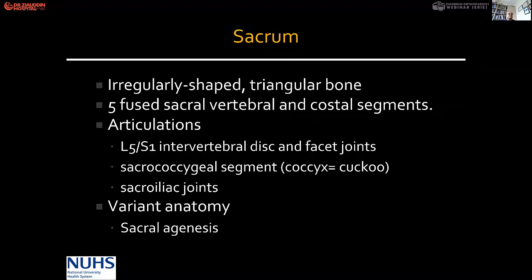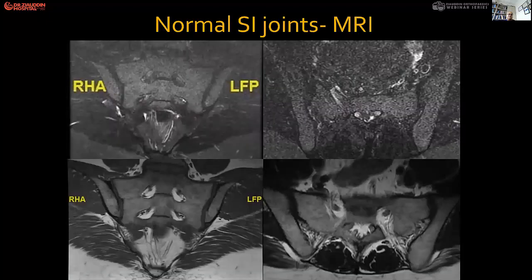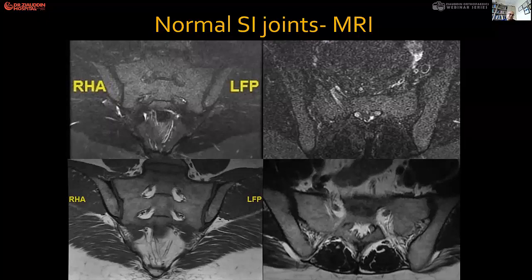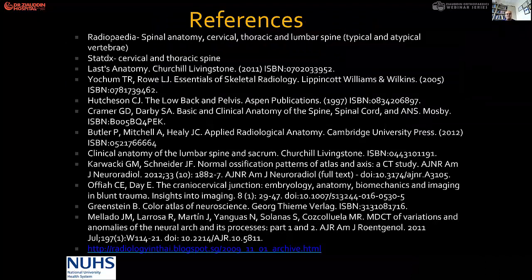A sacrum MRI shows T1-weighted images of the sacroiliac joint on the left pictures, and slightly posterior cuts show the neuroforamina. A contrast-enhancing sequence shows the fat lighting up around the nerve roots. The references for this section are borrowed and adapted from radiology colleagues for orthopedic residents. We'll now have a quick overview of some basic imaging in orthopedics.